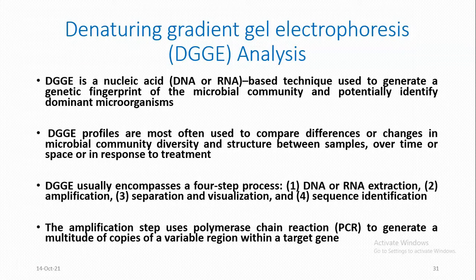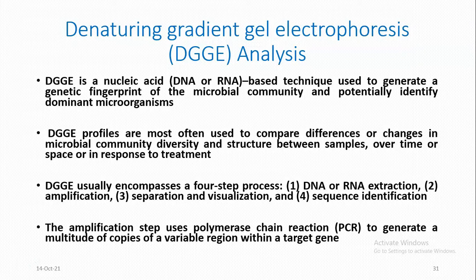Denaturing Gradient Gel Electrophoresis (DGGE) analysis: DGGE is a nucleic acid DNA or RNA based technique used to generate a genetic fingerprint of the microbial community and potentially identify dominant microbes. DGGE profiles are most often used to compare differences or changes in microbial community diversity and structure between samples over time or space, or in response to treatment. DGGE usually encompasses a four-step process: DNA or RNA extraction, amplification, separation and visualization, and sequence identification.